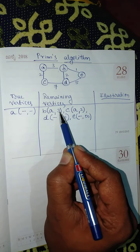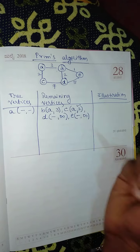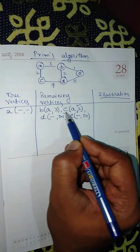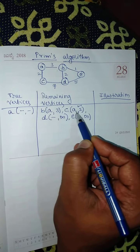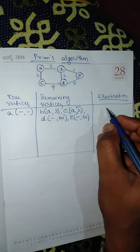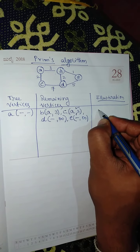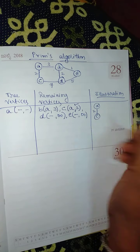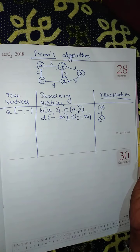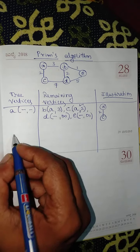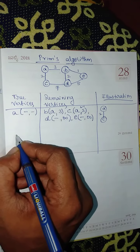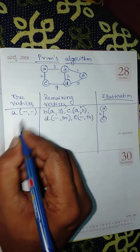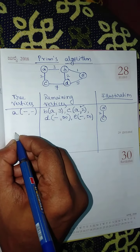Among the remaining vertices, the minimum cost is two (versus three), so we choose the edge with cost two. We choose the edge A to C with a cost of two. Include that edge A-C in the minimum spanning tree.